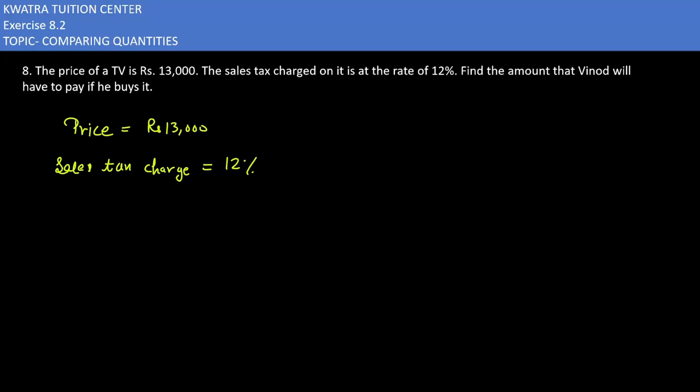How much is it? It would be 12% of 13,000. You will write it as 12 over 100 and on the other side you have 13,000.